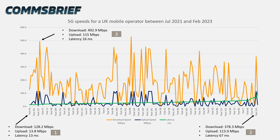The first reading at the bottom left had the lowest latency of 13 milliseconds, with a download speed of 128.2 Mbps and an upload speed of 13.8 Mbps. The second reading at the bottom right had a very high latency of 67 milliseconds, with a download speed of 378.3 Mbps and an upload of 113.9 Mbps. Is the latency going up as the data rate goes up? Of course not — data rates and latency are independent. The third reading shows a download speed of 492.9 Mbps, upload of 115 Mbps, and a latency of only 16 milliseconds — confirming there is no direct correlation between download speeds and latency.